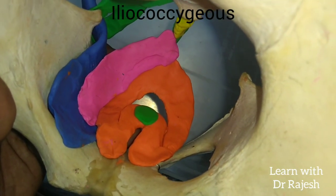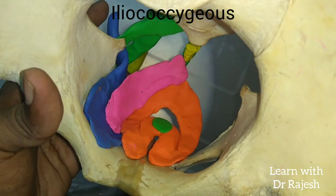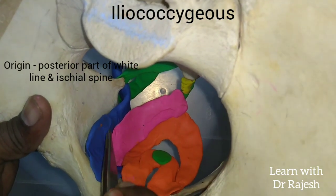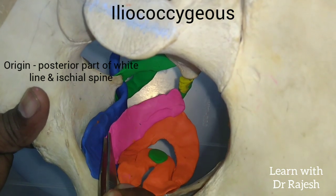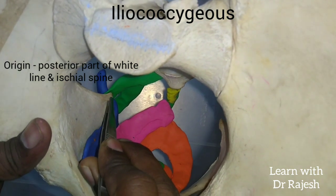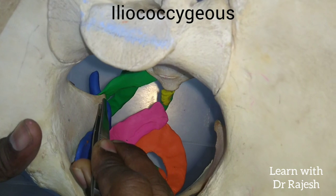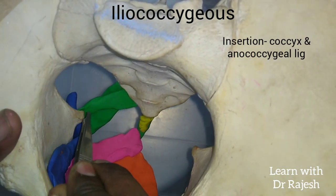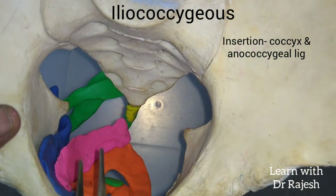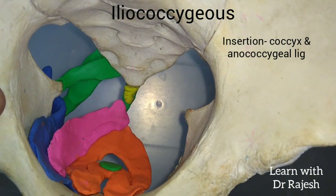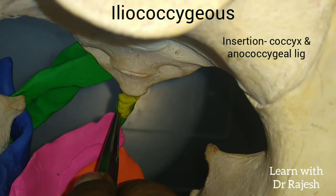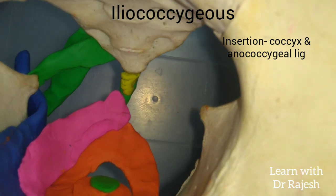Next, we will see the iliococcygeus part of the levator ani. The iliococcygeus takes origin from the posterior half of the white line, and also from the pelvic surface of the ischium and the ischial spine. It travels medially and gets inserted into the last two pieces of the coccyx and also onto the anococcygeal ligament.